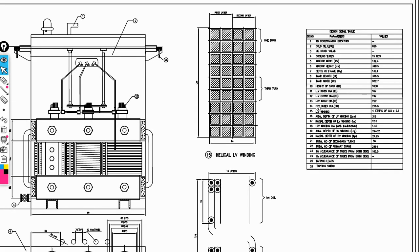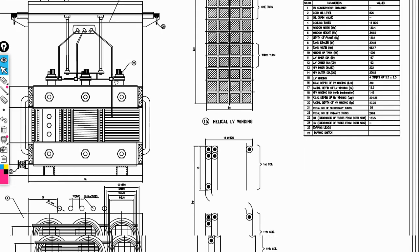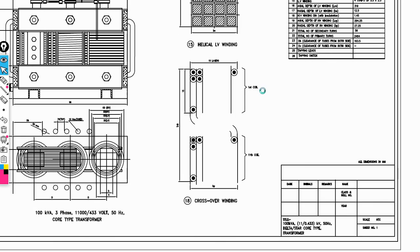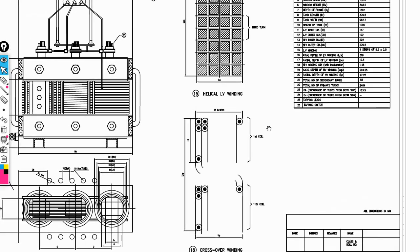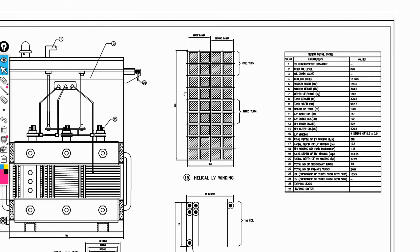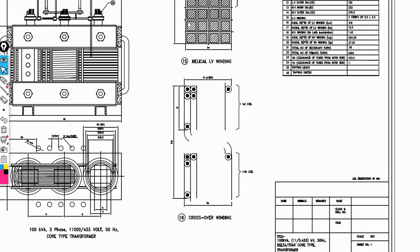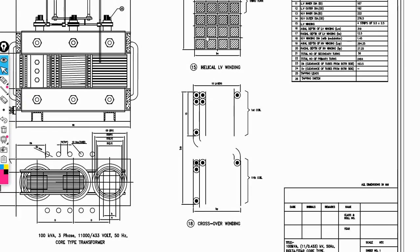These are the several parameters that are important for designing the three-phase core-type transformer. In this transformer, we need two windings: helical winding and crossover winding.